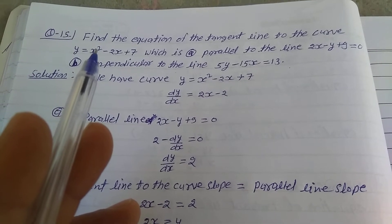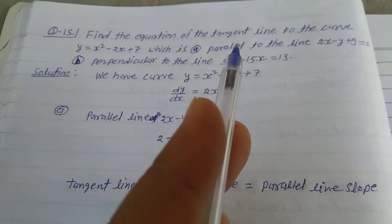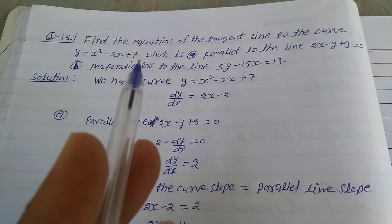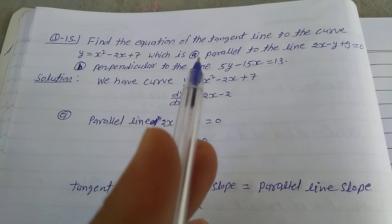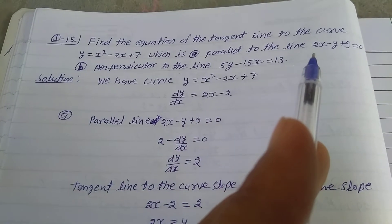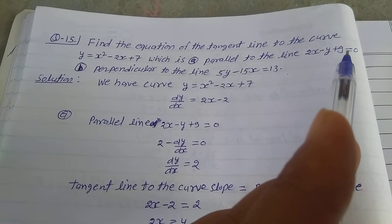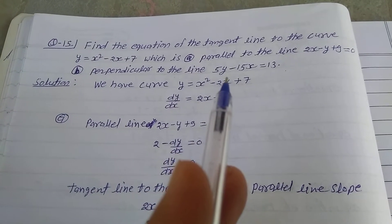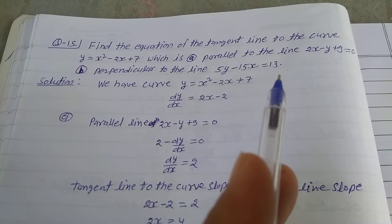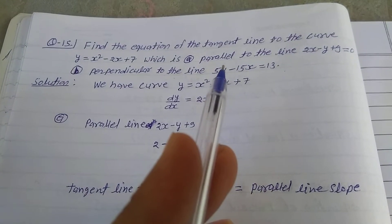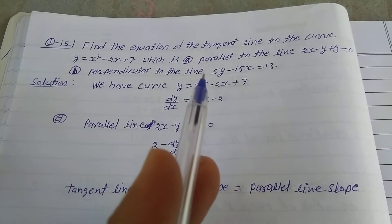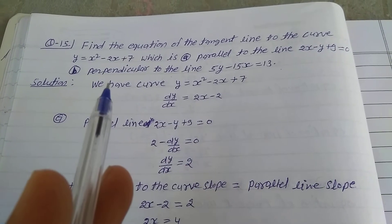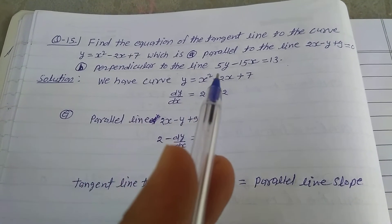Explain question number 15, exercise 6.3, class 12th: find the equation of the tangent line to the curve y = x² - 2x + 7 which is (a) parallel to the line 2x - y + 9 = 0, and (b) perpendicular to the line 5y - 15x = 13. We need to find the tangent equation that is parallel to the first line and perpendicular to the second line.